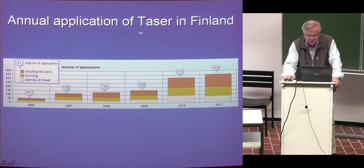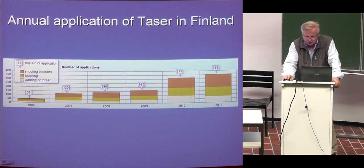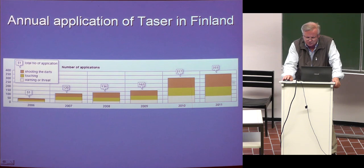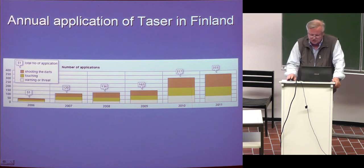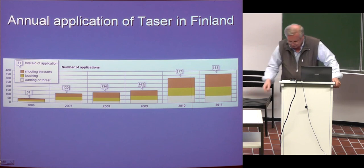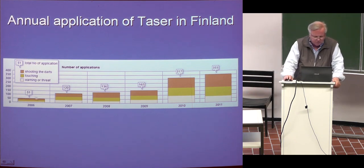Here is the annual application of the taser in Finland — the number of applications. What is positive is that in 2011, of 355 total uses, many were just touching with the taser or giving a warning, which is often enough to change the behavior of aggressive persons.